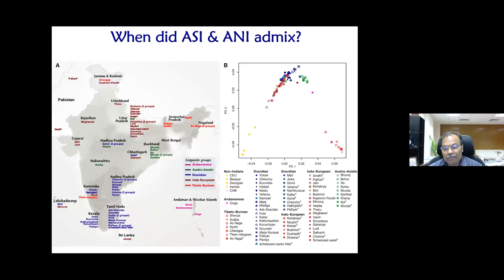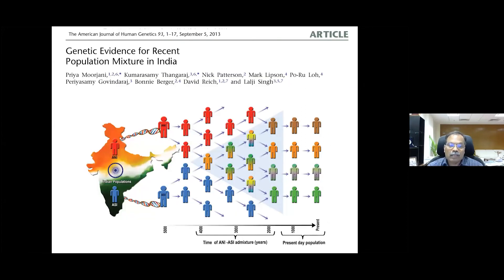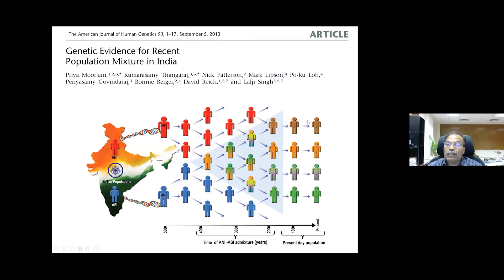To understand when this admixture took place, we analyzed a large number of populations from south and north using the same markers. We established that the Ancestral South Indians and Ancestral North Indians initially gave rise to many population groups, and during approximately the last 2,000 to 4,000 years, these two founding groups mixed. After that, for the last nearly 2,000 years, these populations started maintaining endogamy — and the caste system probably put more pressure on populations to maintain endogamous marriage practices.